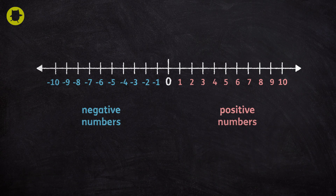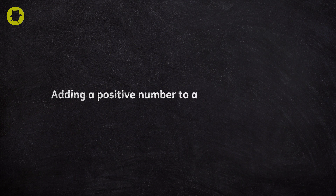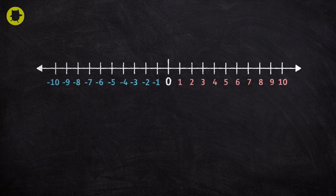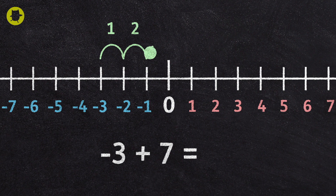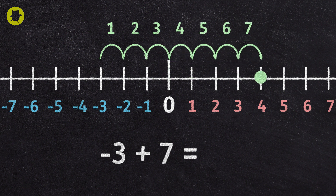There are rules we can use when adding and subtracting positive and negative numbers. To add a positive number to a negative number, we count forward the amount we're adding. Let's take negative three add seven. To add seven, a positive number, we move seven places to the right. Negative three add seven is four.